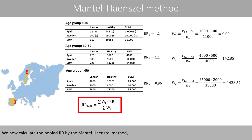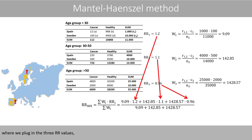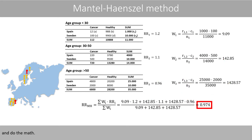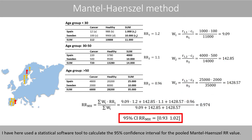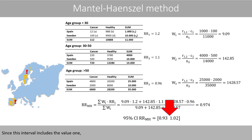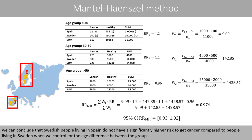We now calculate the pooled relative risk by the Mantel-Haenszel method, plugging in the three relative risk values and the corresponding weights. Using statistical software to compute the 95% confidence interval for the pooled Mantel-Haenszel relative risk value, and since this interval includes the value 1, we can conclude that Swedish people living in Spain do not have a significantly higher risk to get cancer compared to people living in Sweden when we control for the age difference between the groups.